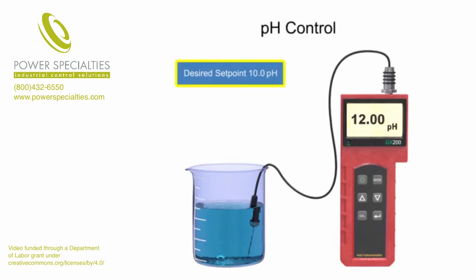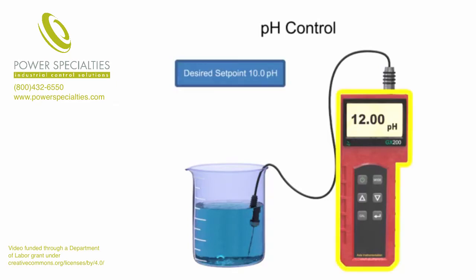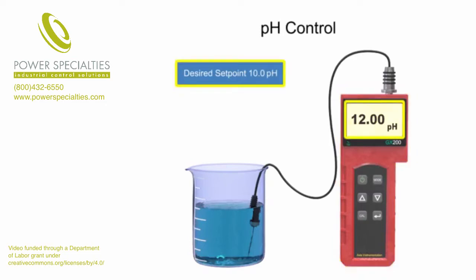To maintain the desired pH level in a solution, a sensor is used to measure the pH value. If the pH is not at the desired setpoint, a reagent is applied to the solution.